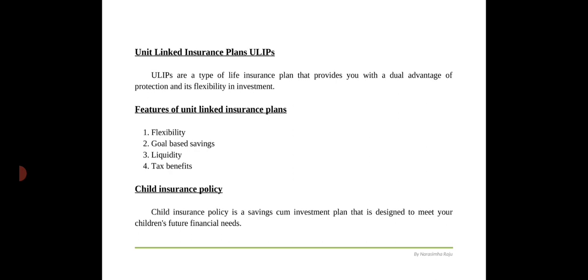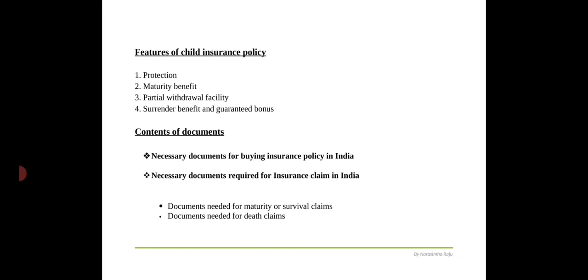The features and benefits of child insurance policies include: the first and most important benefit is protection — buying a child insurance plan is to protect your children. In case of any unfortunate event, a good insurance policy covering your children's financial needs can take care of their welfare even in case of your absence. The next benefit is maturity benefit — children's plans are designed so that your children are protected financially at every important stage of life. The maturity of child plans is often around a specific stage, typically when children turn 18 or 21 years of age.